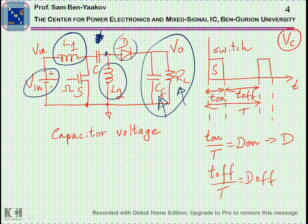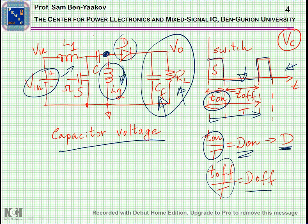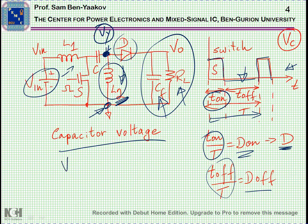We are assuming operation with a given duty cycle — the switch is turned on, then off, repeatedly. We define the on-time over the period as D_on, or just D, and the off-time over the period as D_off. Now let's get back to the capacitor voltage. Let's start with the node I'll call Vy. If I look at the other side of inductor L2, that point is ground — voltage is zero. This means that if the average voltage on L2 is zero, as we just said, then the average voltage of Vy must be zero.